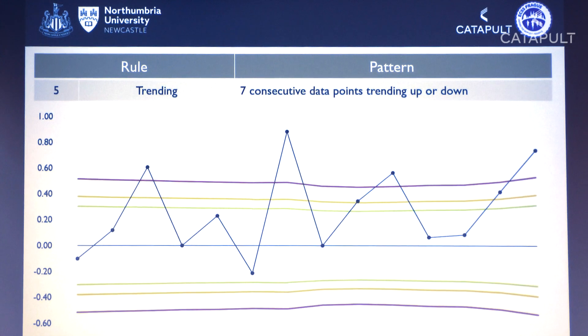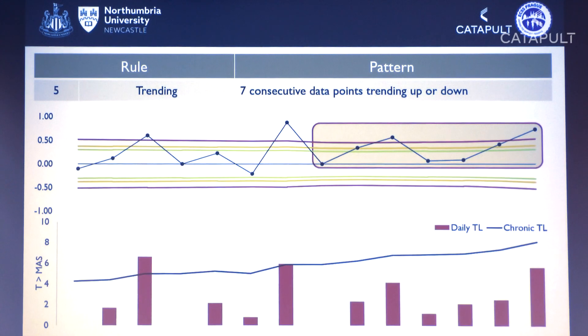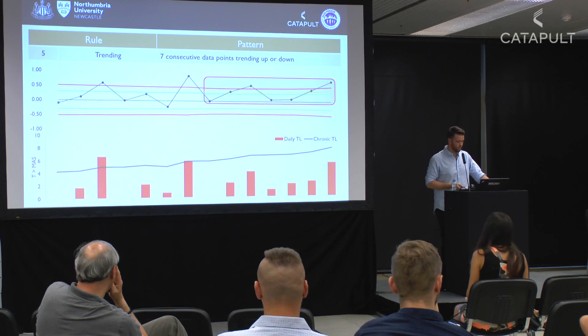Rule 5: seven consecutive data points trending up or down. You can see seven positive points above zero — the player has trained or had a game six days in a row and their chronic load is constantly increasing. That might be a planned overload, or we might need to rein them back and introduce recovery strategies.